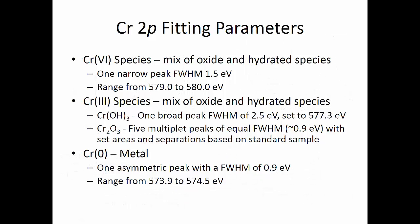We can now define a set of chromium 2p3 halves fitting parameters. For the chromium 6+ species, one narrow peak with a FWHM of around 1.5 eV at a binding energy range of 579 to 580 eV. For chromium 3+ species, chromium hydroxide will be one broad peak with a FWHM of about 2.5 eV. For chromium oxide, we use five multiple peaks of equal FWHM with set areas and separations based on the standard sample, using constrained peaks to mimic the multiple split shape. For chromium metal, one asymmetric peak is used.